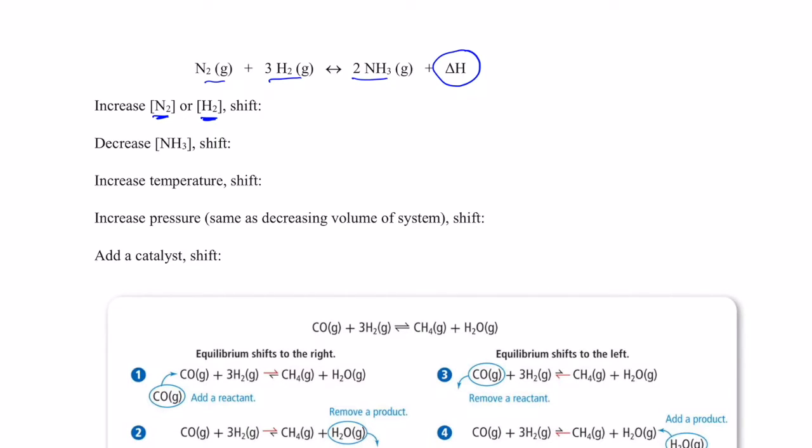So, we would say that the equilibrium, in order to use those up, would shift to the right. We would produce more ammonia gas. Here, let's look at it this way. The equilibrium expression for this reaction is NH3 squared over N2 and H2 concentrations cubed.